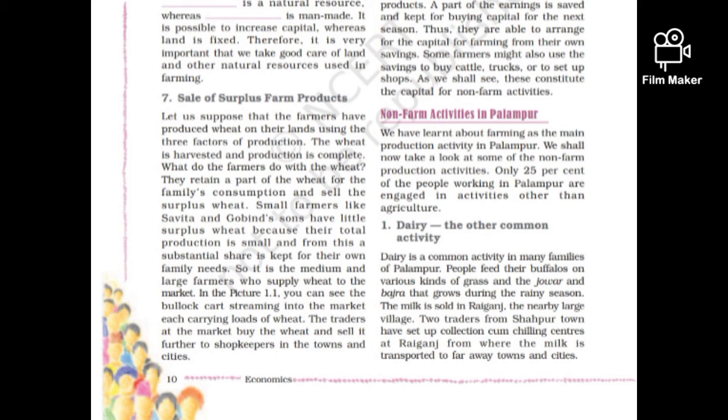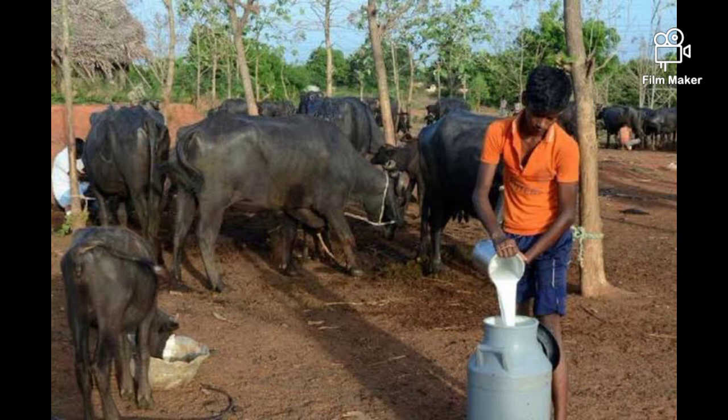The other common non-farm activity in Palampur is dairy. People in the village keep buffaloes and cattle. They engage in dairy activities, collecting and selling milk, which is a common livelihood alongside farming.